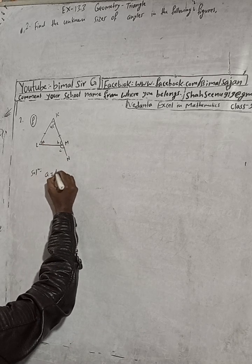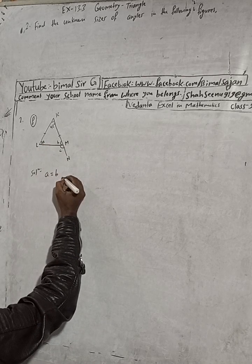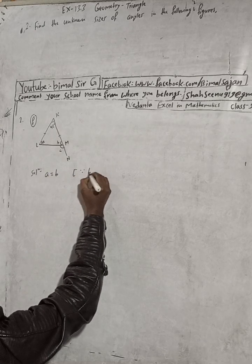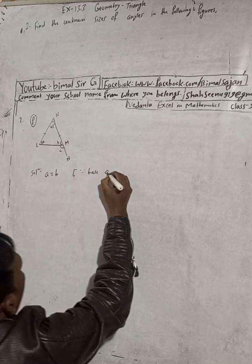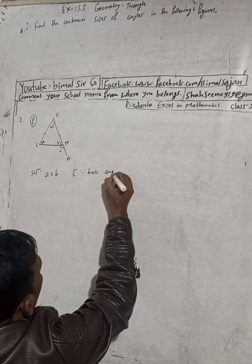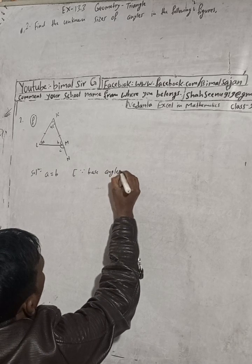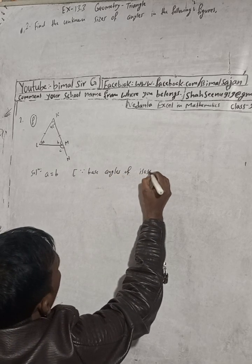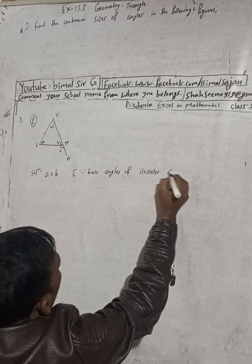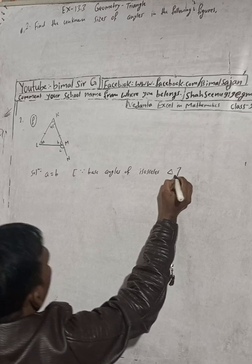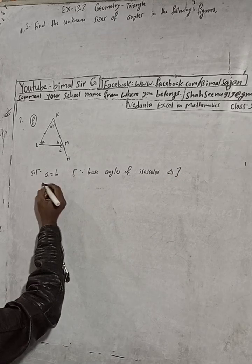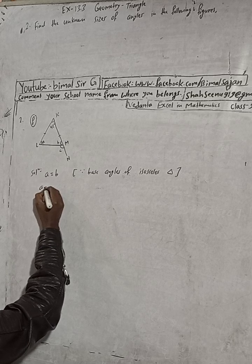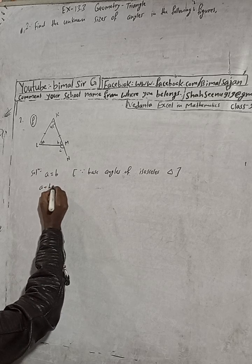A is equal to B. Reason: base angles of an isosceles triangle are equal. So A is equal to B. Now we can write A plus B plus...